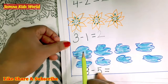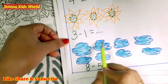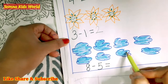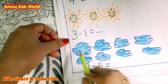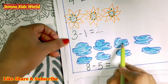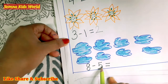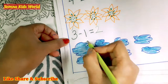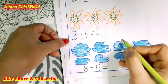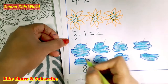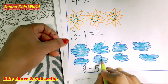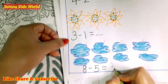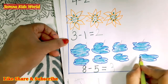Next, total number of clouds — one, two, three, four, five, six, seven, eight — we are having eight clouds. Minus five — so cut one, two, three, four, five clouds. How many left? One, two, three — three clouds.